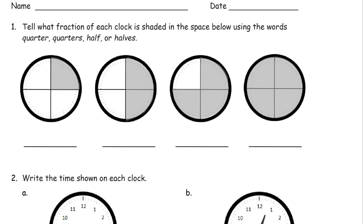So clock faces — we're talking about round clock faces. What fraction of each clock is shaded in the space below? Using the words quarter, quarters, half, or halves. Now a quarter is one-fourth, so it's just another way — it's like a nickname for fourths. So what's shaded in here, it's one-quarter. Please keep writing it in unit form like this. It actually matters not to just write a fraction in regular fraction notation for one-fourth, because we want to use the word quarter. It matters because we want to practice reading it and writing it so that we can recognize it and know how to spell it.